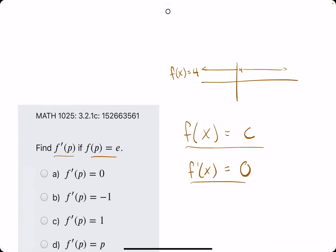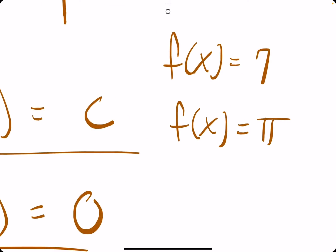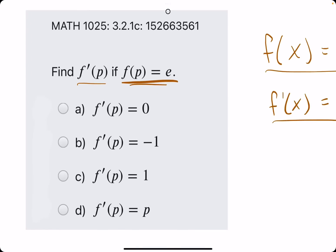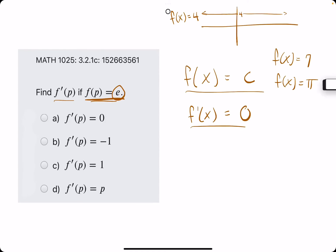So this could be f of x equals 7, that kind of constant. It could be f of x equals pi. Pi is a number, pi is a constant. Or it could be f of x, or in this case f of p, equals e. E is very similar to pi. It is just a number, so its derivative is also 0.